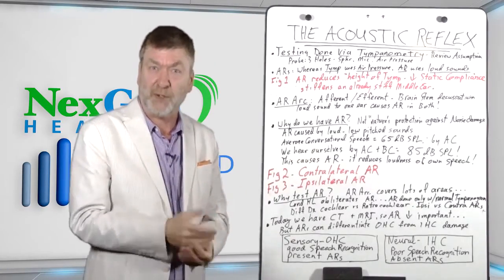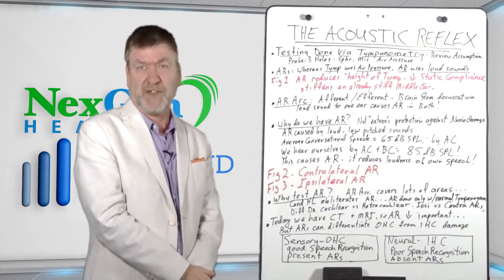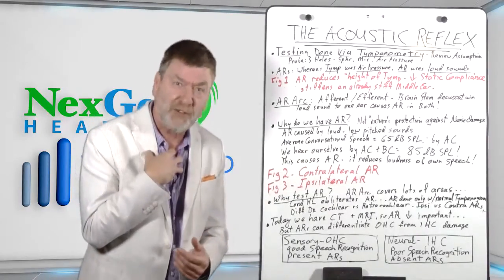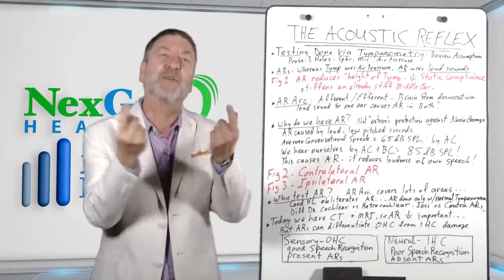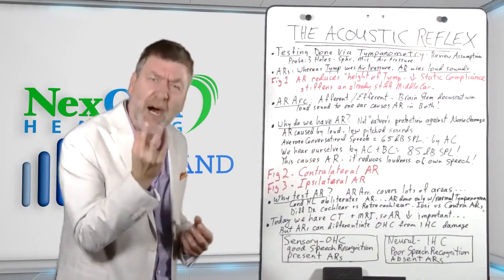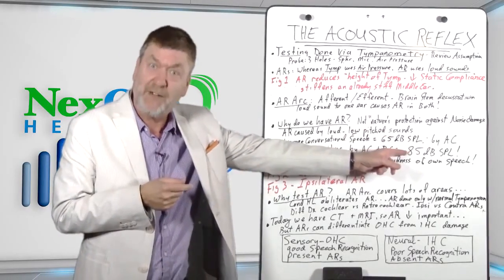That is why we hear ourselves so differently than other people hear us. You ever listen to your own voice on a recording? Whenever you hear it yourself, you're going, oh, is that me? Boy, I sound awful. Some would say I sound like geese farts on a muggy day. Well, poor you. I sound much richer and better to myself because I'm hearing myself through air and bone. And my own voice, the loudness of my own voice to me is not 65, it's around 85.